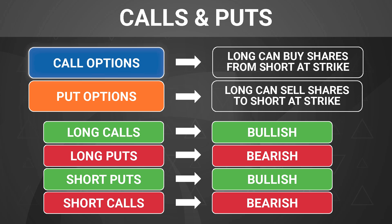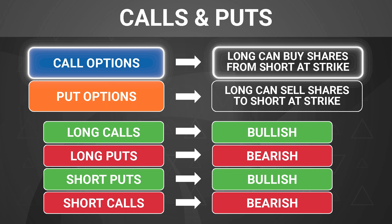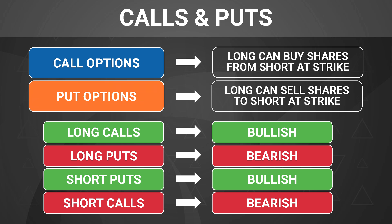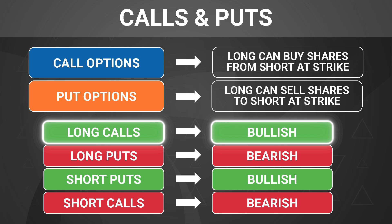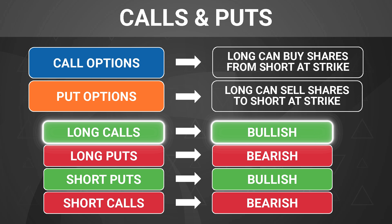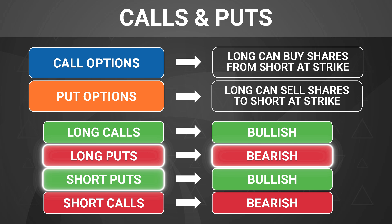In the option world, there are two basic option types: call options and put options. Call options give the long side the option to buy shares from the short side at the strike price. Put options give the long side the option to sell shares to the short side at the strike price. Since the strike price is fixed over the life of the contract, the long side of a call option is bullish — they want the stock price to rise above the strike price to buy at a lower price and lock in an instant gain. The long side of a put option is bearish — they want the stock price to fall below the strike price to sell at a higher price. Since options are a zero-sum game, if the long side of the call is bullish, the short side must be bearish; if the long side of the put is bearish, the short side must be bullish.